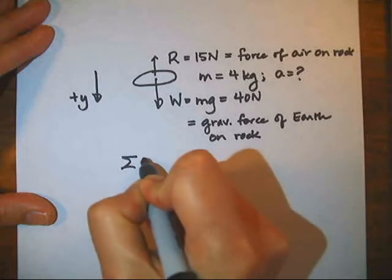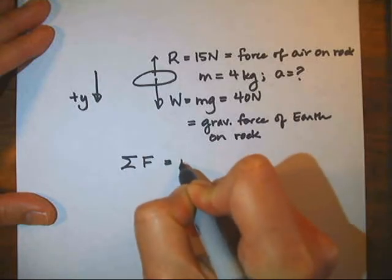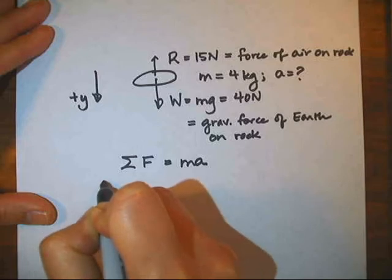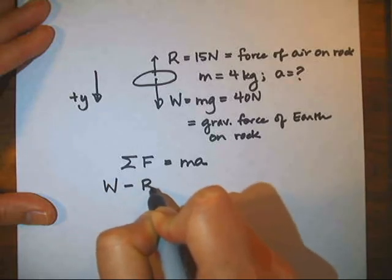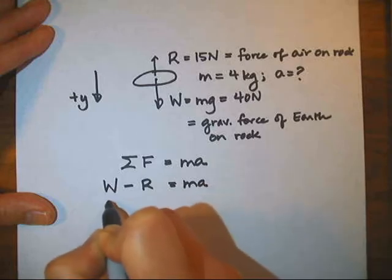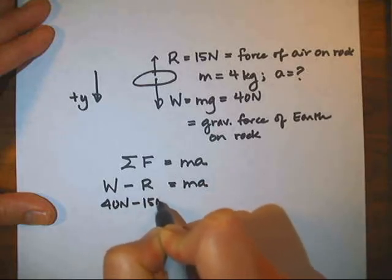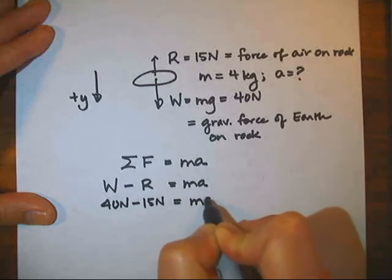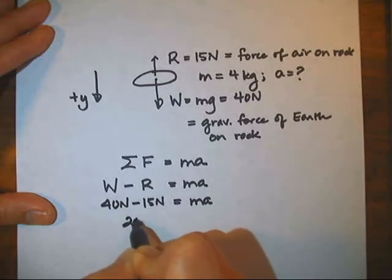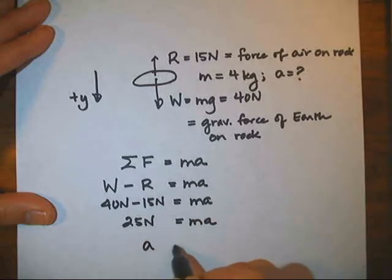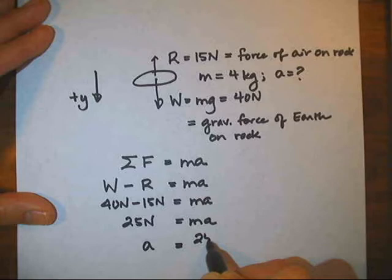Now apply Newton's second law. The sum of the forces is the mass times the acceleration. The weight points downward, which we've decided is the direction of the acceleration, so it comes in as positive. Air resistance is upward, so it comes in as a negative force. The net force is 25 newtons. And the rock has an acceleration of 6.25 meters per second squared.